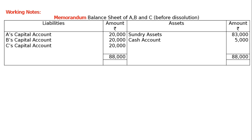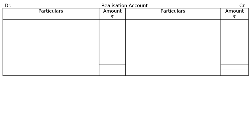The asset side totaling is rupees 88,000. Take it to the liability side and find out the gap — that is, liabilities as a balancing figure of rupees 28,000. The liabilities are not given but assets are given as rupees 88,000 including cash. In the realization account, sundry assets are rupees 83,000.